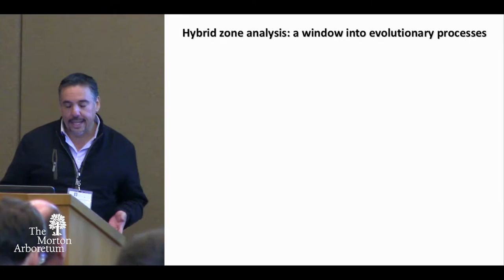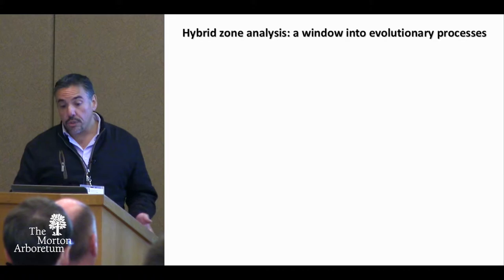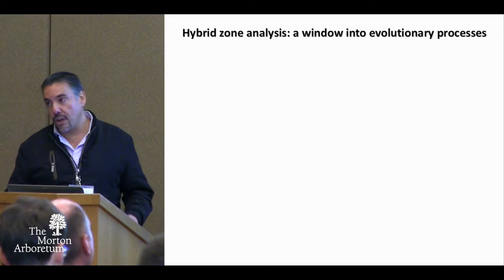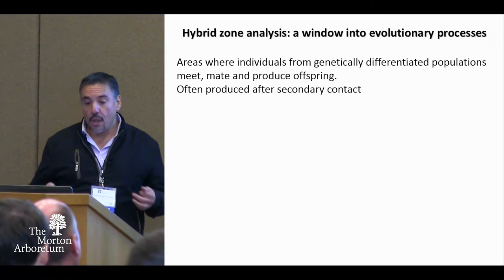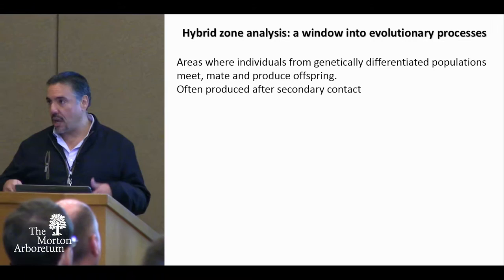One way to understand what is happening, or what is the dynamics of hybridization, is to look at the structure of hybrid zones — what is called hybrid zone analysis. For a long time, hybrid zones have been considered an interesting window into evolutionary processes or natural laboratories. Basically, a hybrid zone is an area where individuals from genetically differentiated populations meet, mate, and produce offspring.